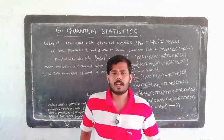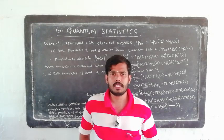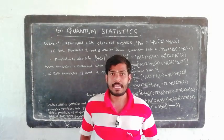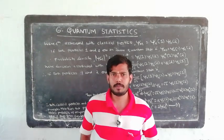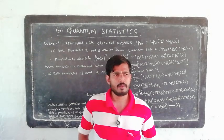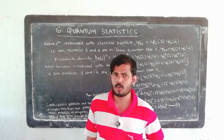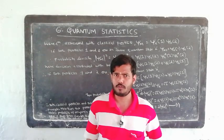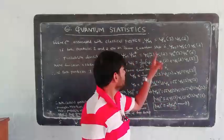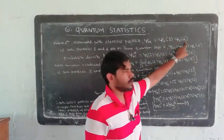If we consider two particles, and the particles are classical particles, then the wave function psi_m under Maxwell-Boltzmann statistics is psi_m equal to psi_a of 1, psi_b of 2. That's why the wave functions are distinguishable. psi_m is equal to psi_a of 1, psi_b of 2.